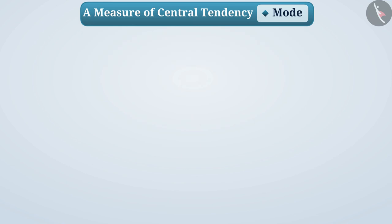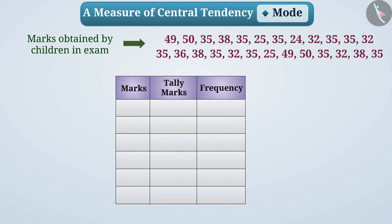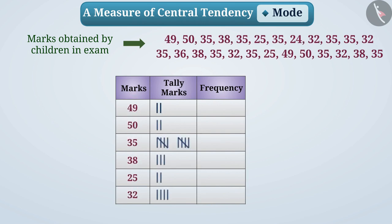The marks obtained by children in a competitive examination are given here. There are a large number of observations, so it will not be easy to find the mode by looking at the numbers. For convenience, we can arrange the data in a frequency distribution table, writing each number with its tally marks and the number of times it has appeared. The count of tally marks tells us the frequency of that number in the observations.